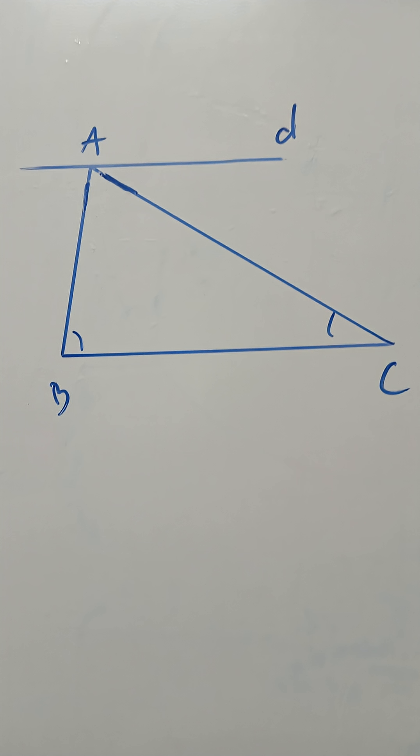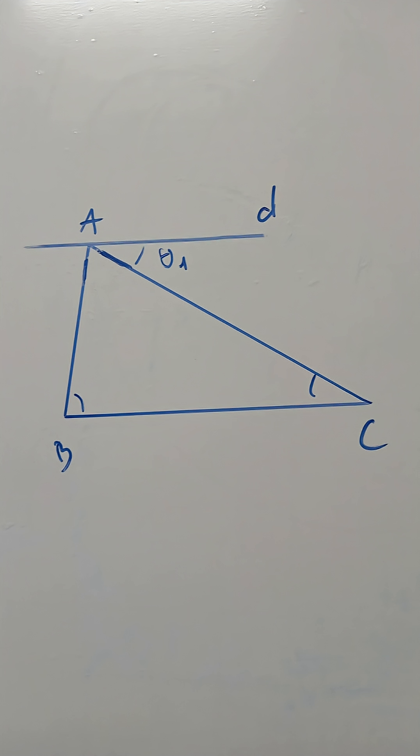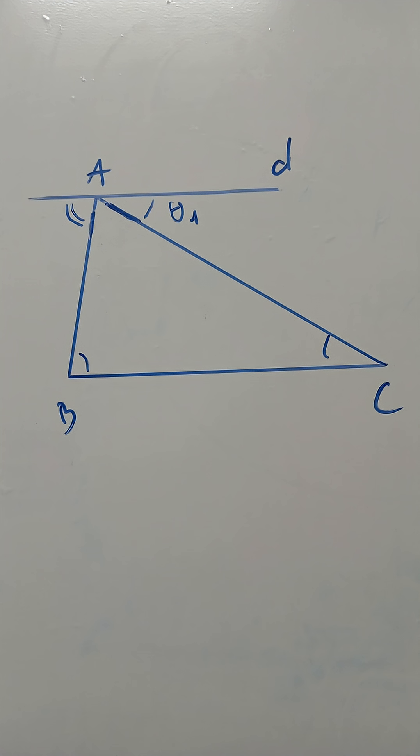Then I will mark the angle made by the line D to AC is theta number 1. The angle made by the line D to BC is theta number 2.